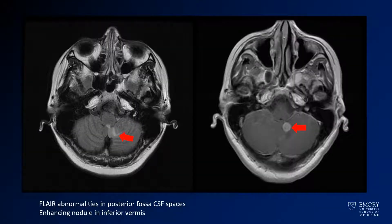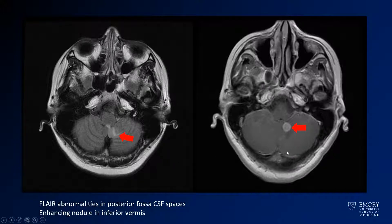Here you see the MR, which confirms that this finding is real. You have abnormal FLAIR signal here in the inferior left cerebellar hemisphere and vermis, and you have an enhancing nodule adjacent to it.